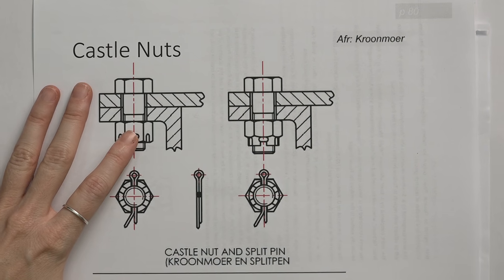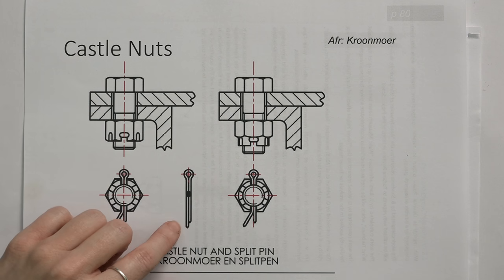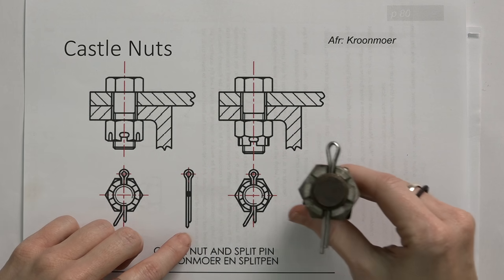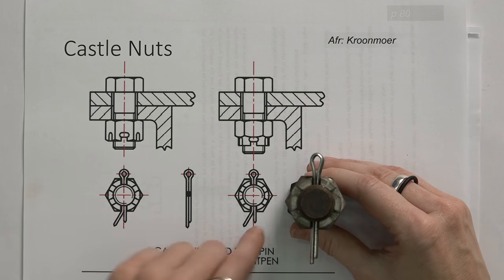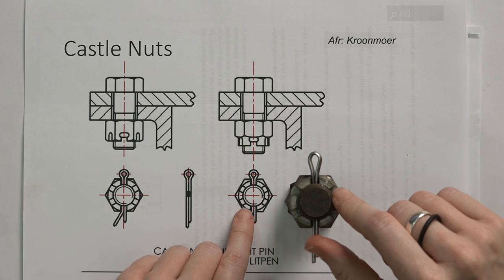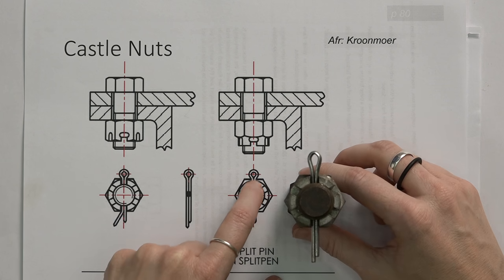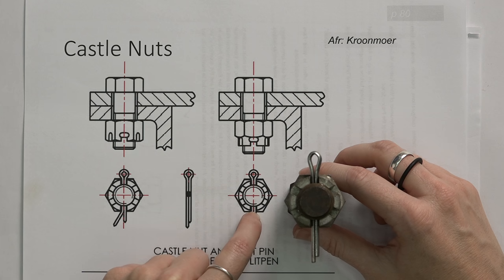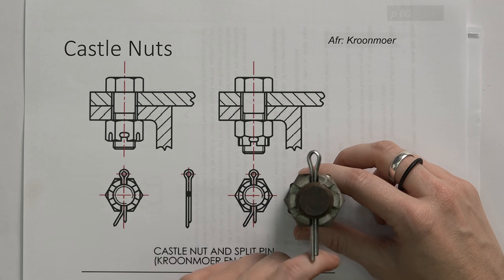All the same rules count as for normal nuts and bolts in terms of how to draw it. But here you can see, when you look at the castle nut from the top, that's why you see this shape that you see. You see this little eye from the split pin, it's going through a groove through the pin and you're opening up the legs to make sure that it's fixed.